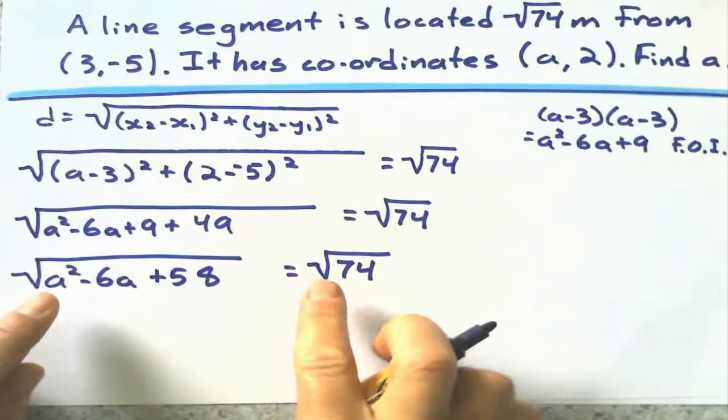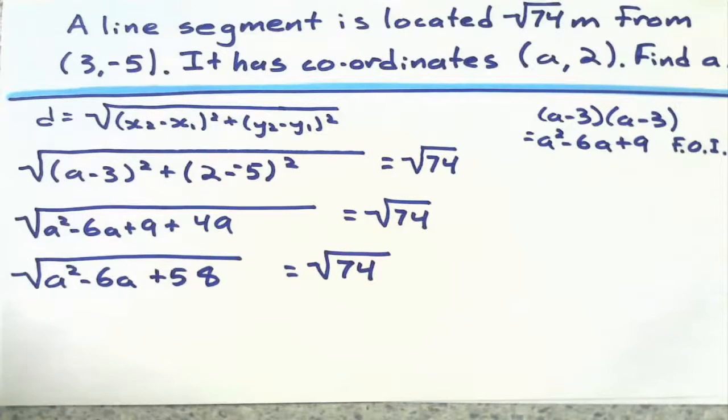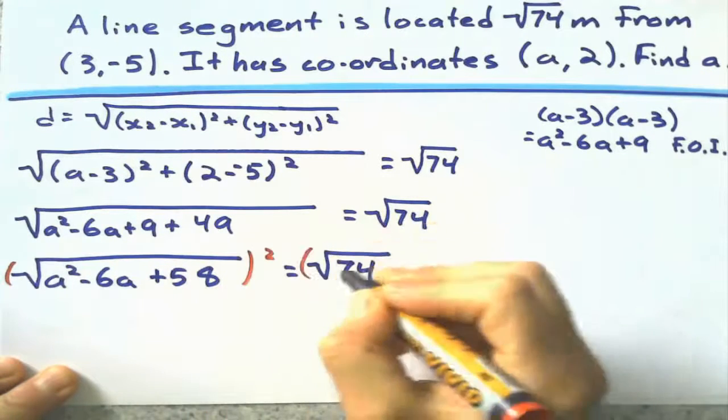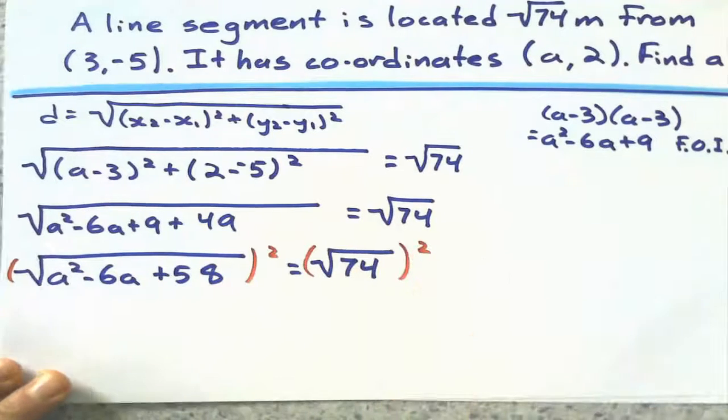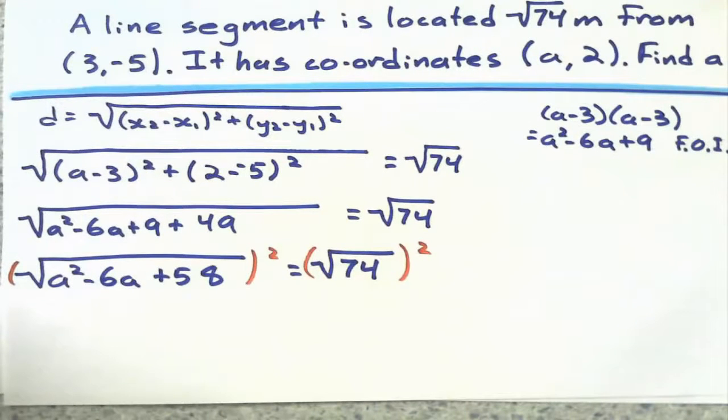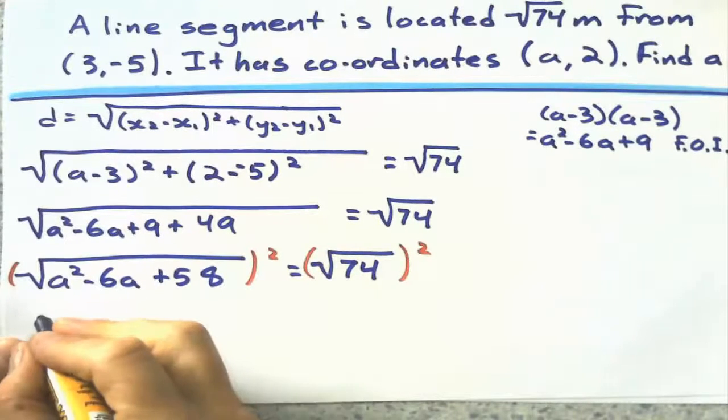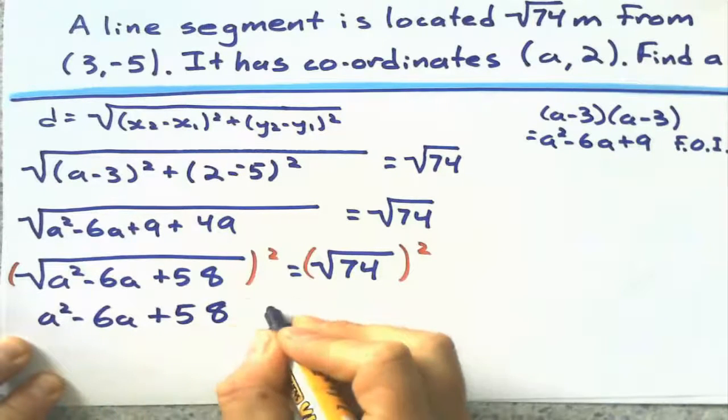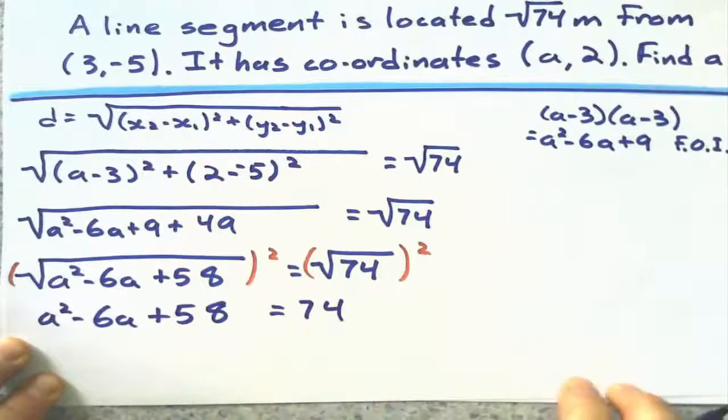And now, if I have the square root symbol on both sides, what can I do to get rid of them? What's the opposite of square rooting? I'll just square both sides. And squaring eliminates the square root symbol. Because they're opposite operations. So, that cleans things up quite nicely. And I set up into solving a quadratic. So, I get a squared minus 6a plus 58 equals 74.